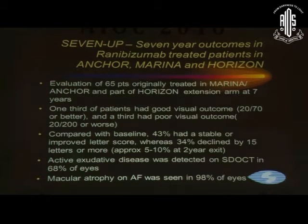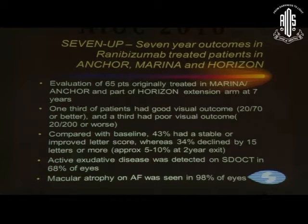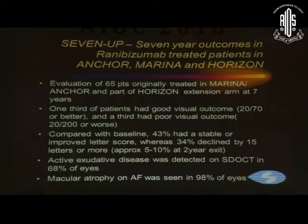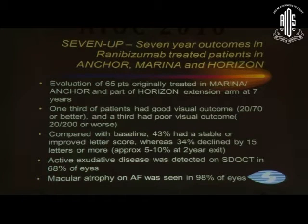The 7-UP trial examined 7-year outcomes in ranibizumab-treated patients originally enrolled in the ANCHOR and MARINA studies. One-third of patients had good visual outcomes and one-third had poor visual outcomes. Compared with baseline, 43% had a stable or improved letter score whereas 34% declined by 15 letters or more. Patients who had relatively fewer injections tended to have greater drops in vision than those who received more regular injections.